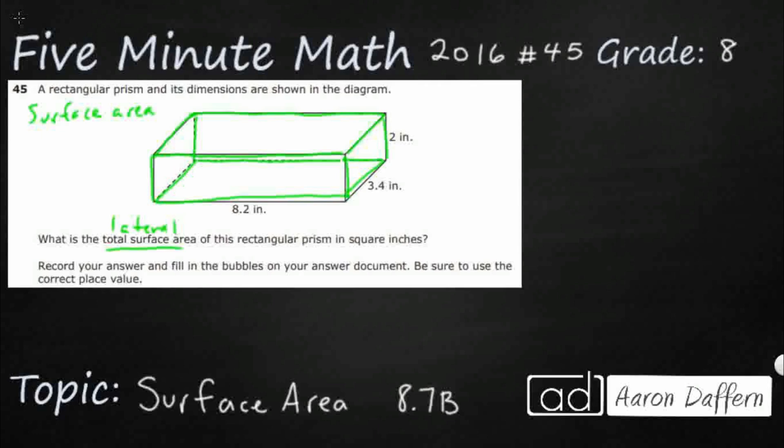That's the lateral surface area, and the perimeter times height. That's going to be your equation for that. You find the perimeter of the base, and then you just multiply that by the height.